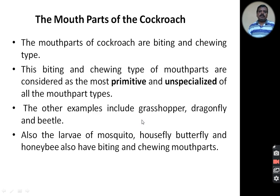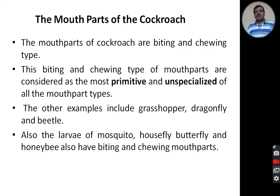The mouthparts of cockroach are of biting and chewing type. This type of mouthpart is considered very primitive and unspecialized. Other examples having this type include grasshoppers, dragonflies, and beetles. The same chewing and biting type of mouthparts can also be seen in the larvae of mosquito, housefly, butterfly, and honeybee.